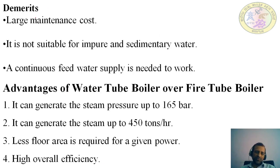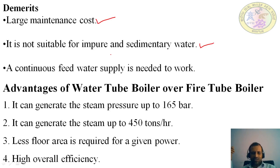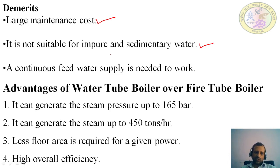The demerits of this boiler: one is a large maintenance cost. It is not suitable for impure and sedimentary water because impurities present in the water get deposited on the walls of the water tubes, creating bad pressure — which is one of the main disadvantages. Also, a continuous feed water supply is needed for it to work.